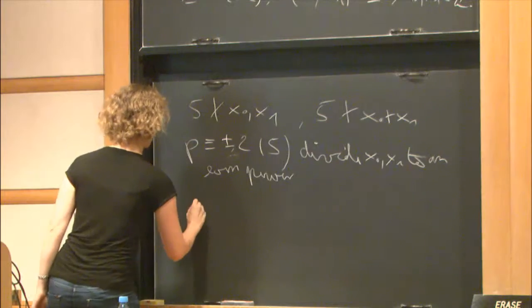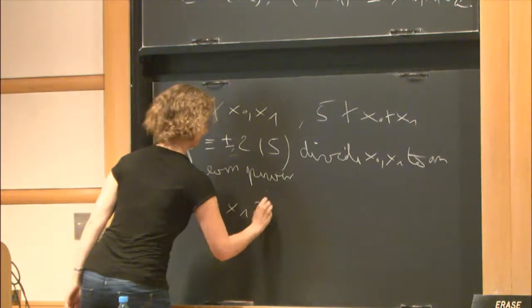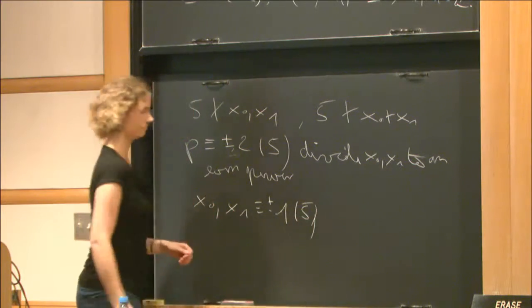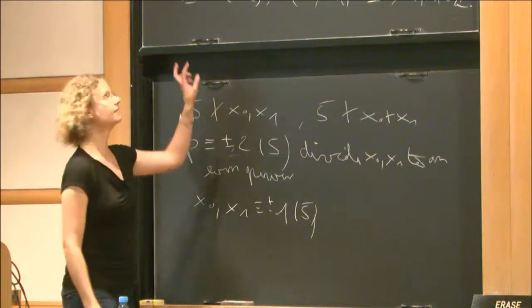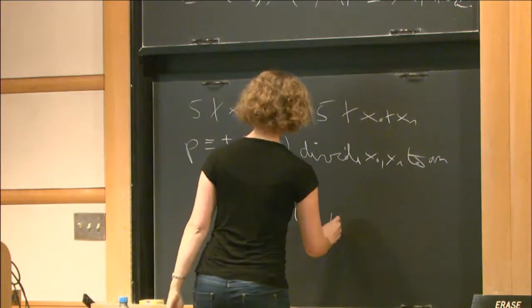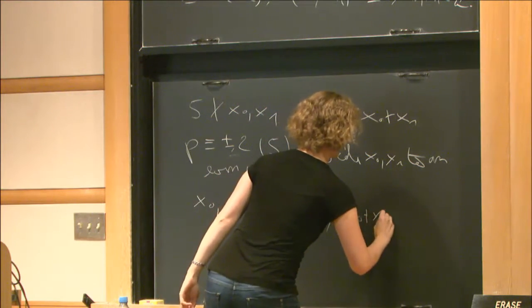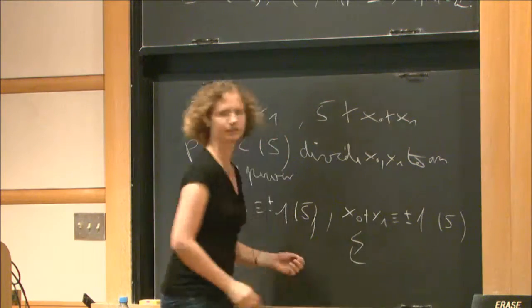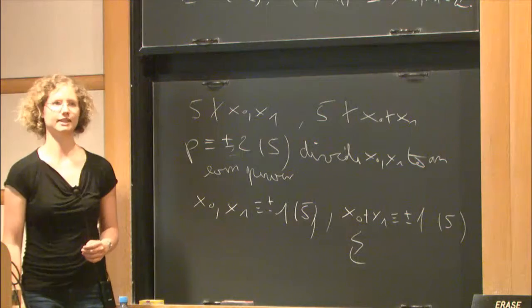So we conclude from this that both x0 and x1, they have to be congruent to plus minus 1 modulo 5. But the same argument applies to the other two linear forms in the second equation. So the very same argument shows you that also x0 plus x1 has to be congruent plus minus 1 modulo 5. Well, that's a contradiction. These things can't happen simultaneously.